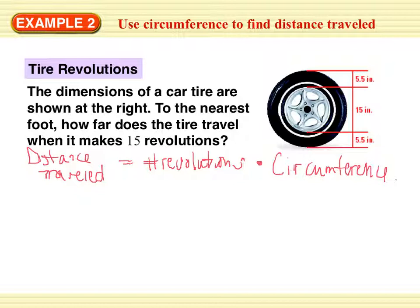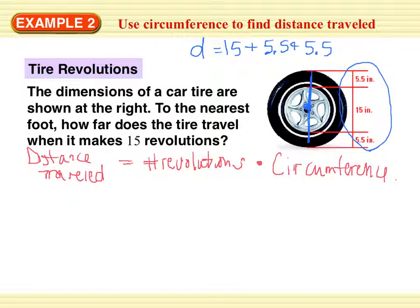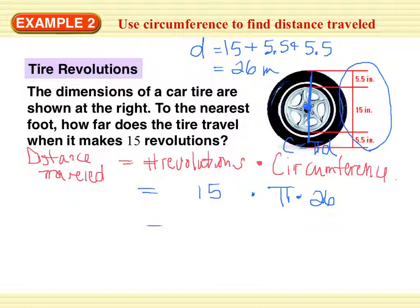We need to find the circumference of this tire. The diameter is going to be all of these added together: 15 plus 5.5 plus 5.5. So 11 plus 15 is 26 inches. The circumference is pi times D. Number of revolutions is 15, so distance traveled equals 15 times pi times 26, which is approximately 1225.2 inches.